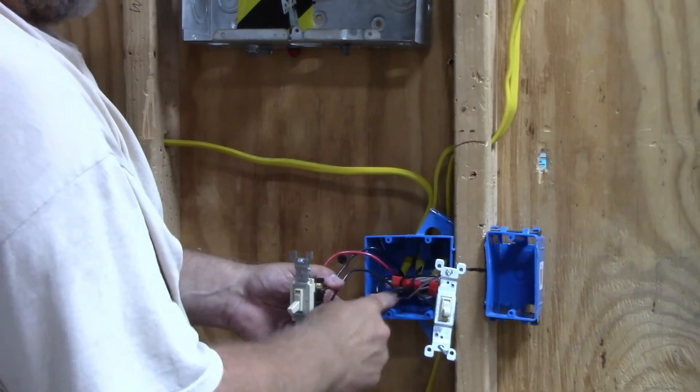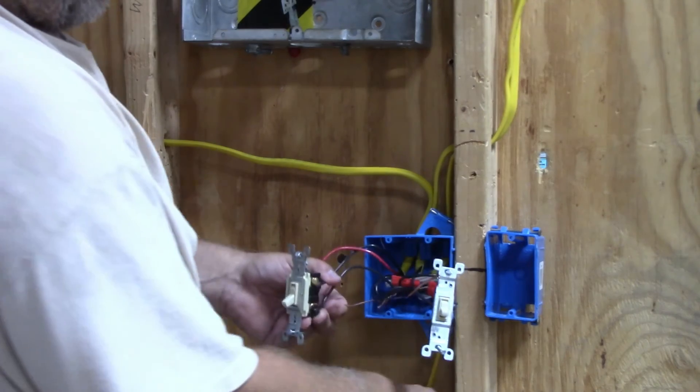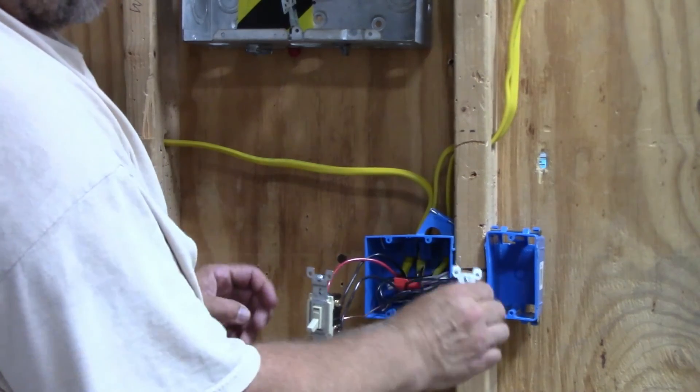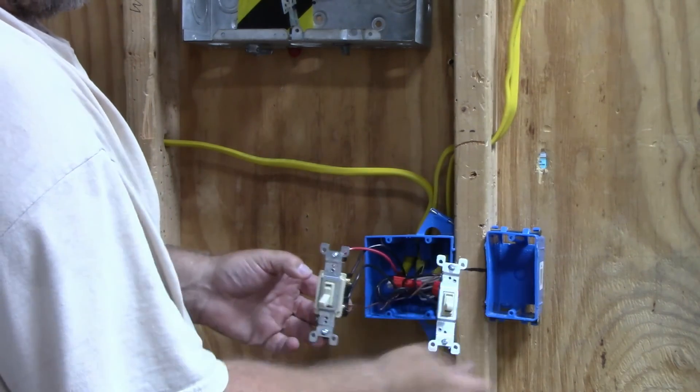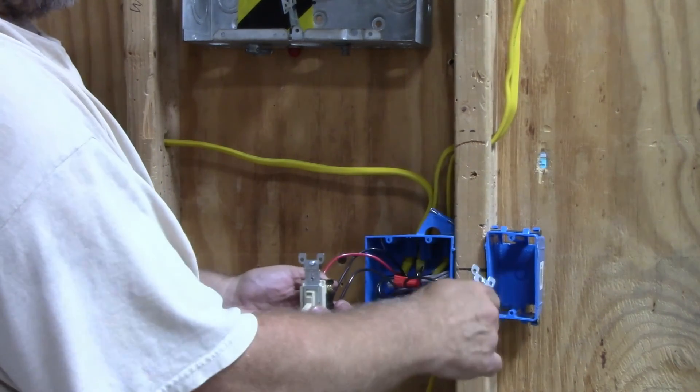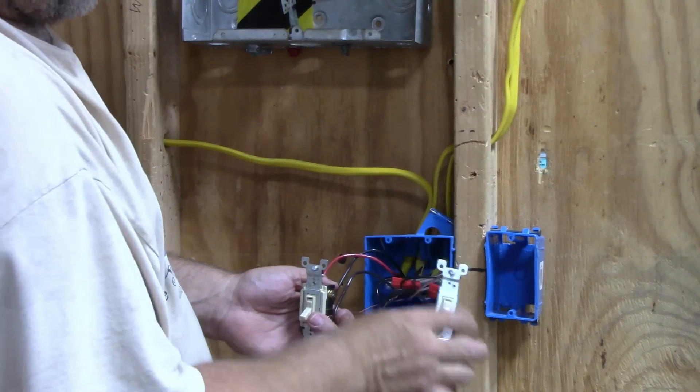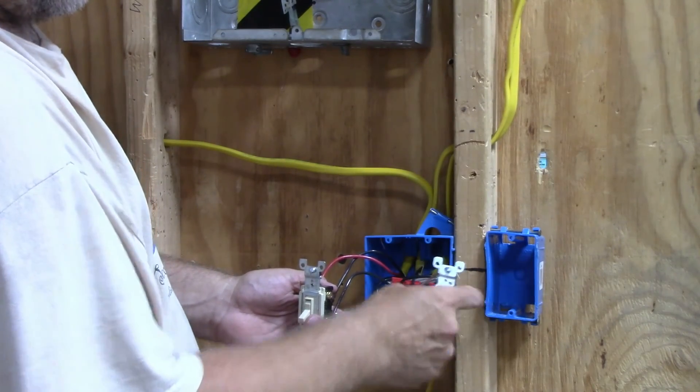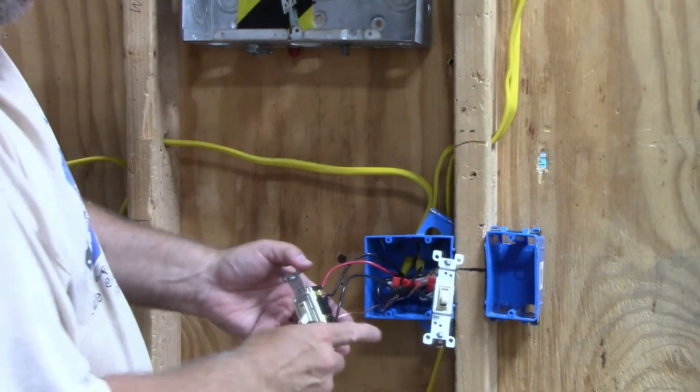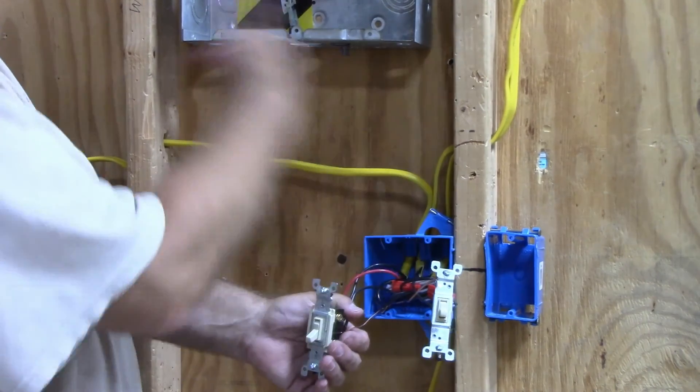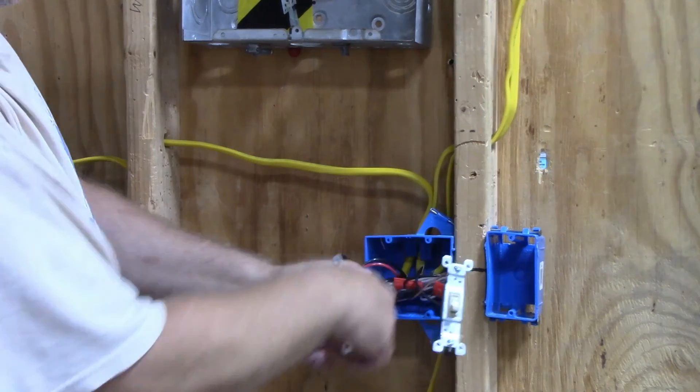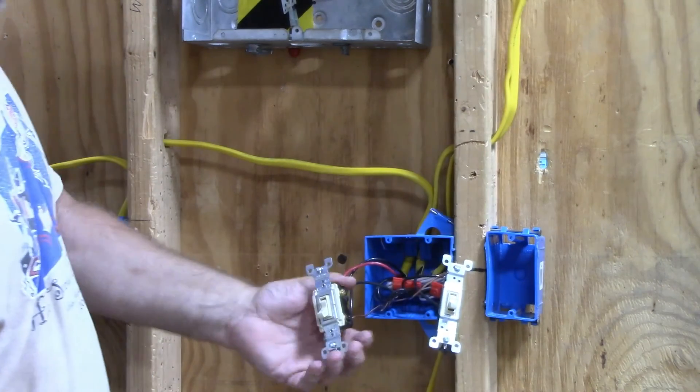The hot wire I had to pigtail because I needed one hot wire for this switch and one hot wire for that switch. So I pigtailed two wires onto my power in and power out. I got a power in, switch leg, power here, and then the travelers to my four-way switch which is going off to my left.